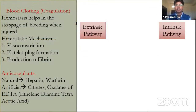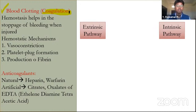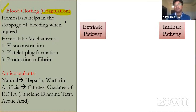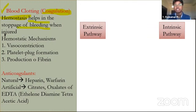Let's learn about blood clotting, also called blood coagulation. Whenever we are injured, blood oozes out from the body, and after three to four minutes blood gets coagulated automatically and the bleeding stops. In scientific terms this is called hemostasis — 'hemo' means related to blood and 'stasis' means stopping.